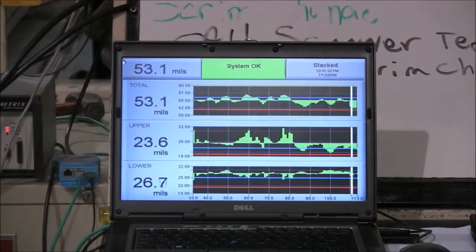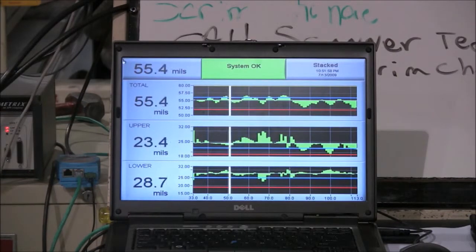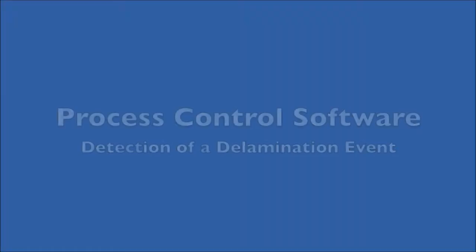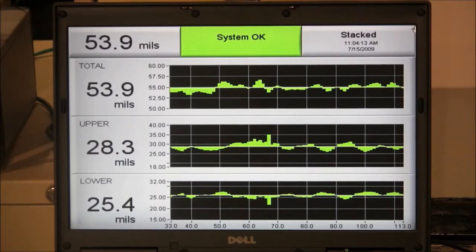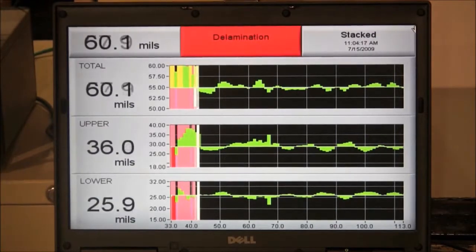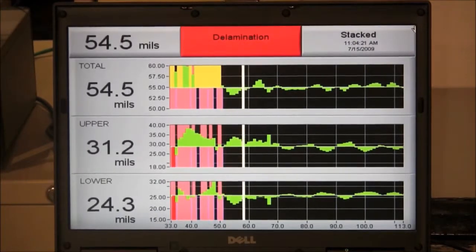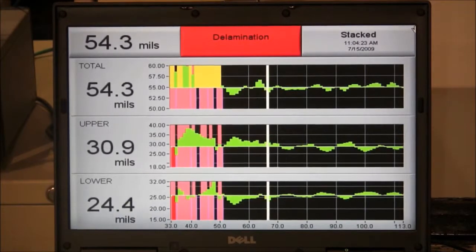The line operators monitor screens showing all three measurements to determine product quality. Each measurement is shown as a deviation from the average thickness. Limits are set to provide instant feedback if any layer of the sheet exceeds its tolerance. Highlighting on the background of the screen indicates delamination and allows the operator to adjust the process to minimize waste and save production costs.